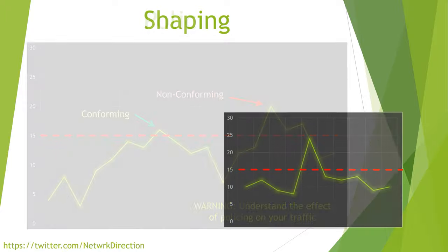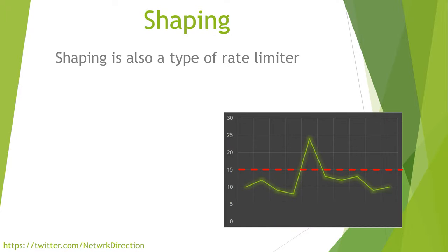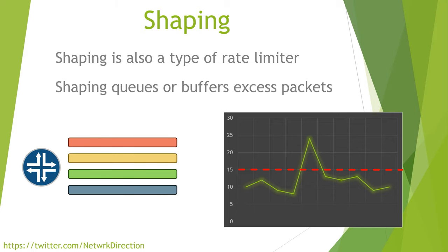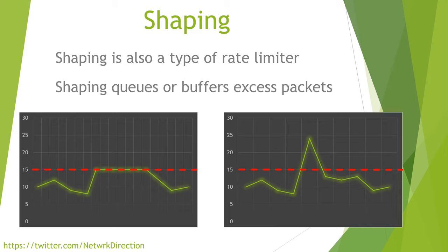Policing is not the only rate limiting technology — we also have shaping. This is very similar to policing but it's a bit gentler. We're still looking at traffic that goes over a particular limit, but we don't simply drop or remark the traffic. Instead, when traffic goes over the limit, excess packets are queued — also called buffering. Excess packets are stored in the queue until there's bandwidth available to send them. This works really well when dealing with small bursts of traffic. Instead of just cutting these peaks off, we're smoothing them out — changing the shape of the graph and smoothing out bursty traffic.